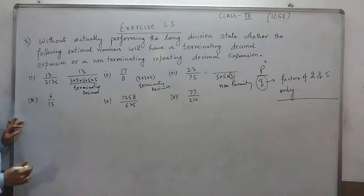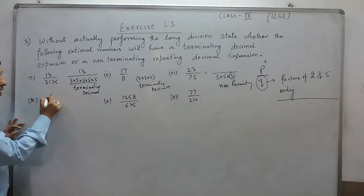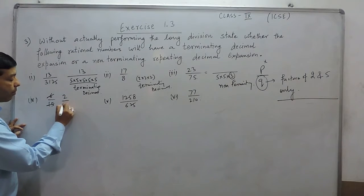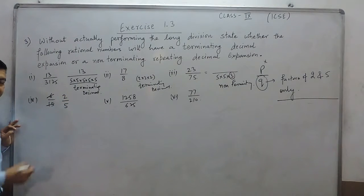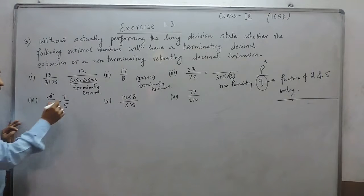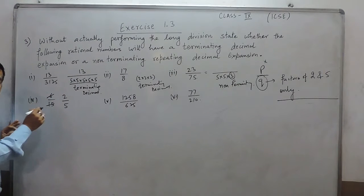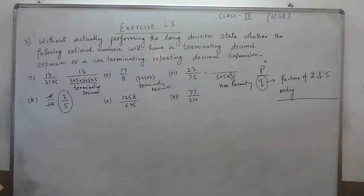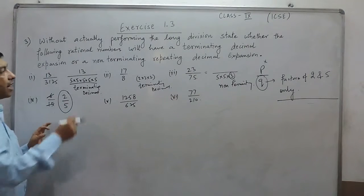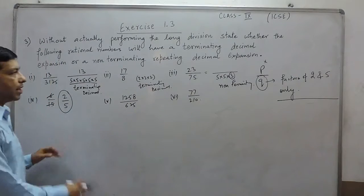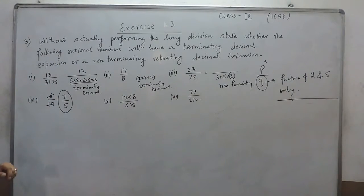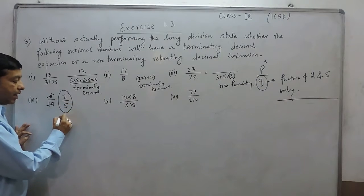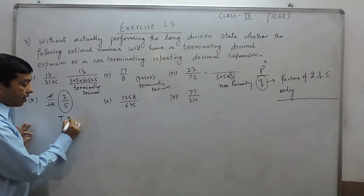When I am talking about 6 upon 15, one thing we have to keep in mind is that first we have to cancel it out. If we cancel it by 3, it will become 2 upon 5. We cannot check 6 upon 15 directly — once we cancel it out, it is 2 upon 5. Now we can define whether it is a terminating or non-terminating decimal.